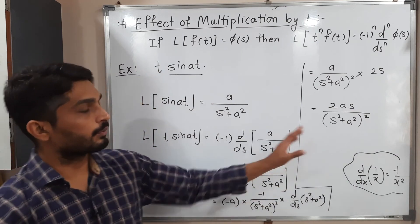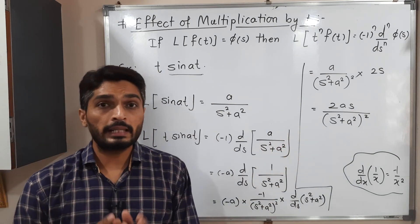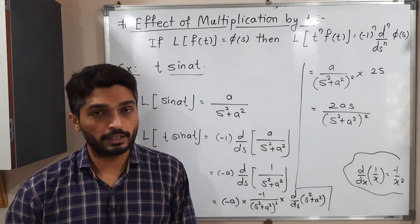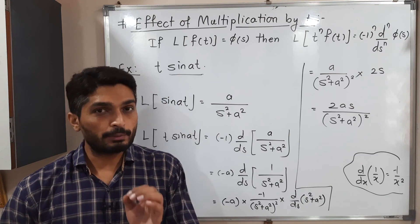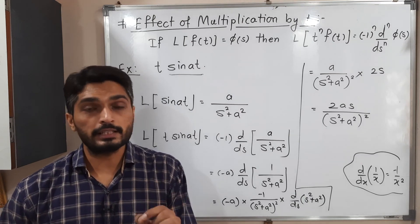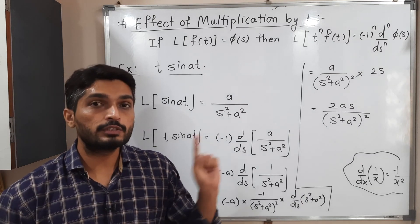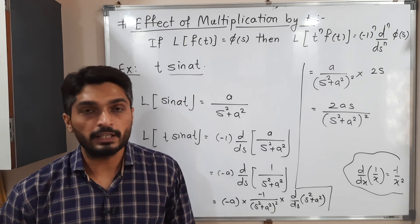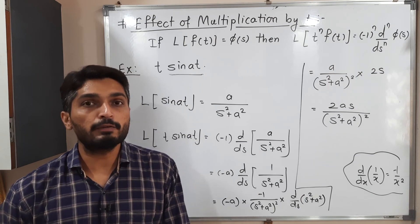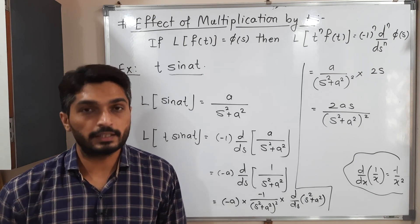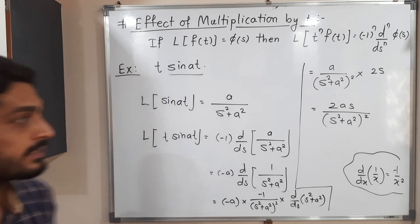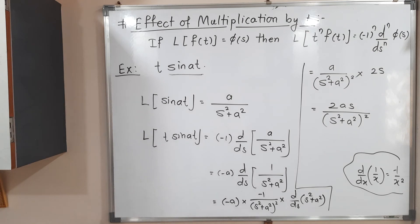In this way we found the Laplace transform of the given function. Keep in mind: when you have t^n as a multiple of a function, you have to use the effect of multiplication by t — simply take the nth derivative of the Laplace transform of the neighboring function. You can make a screenshot of this. In the next videos we are going to discuss a few more interesting examples.